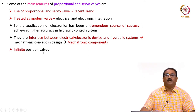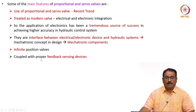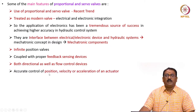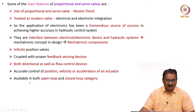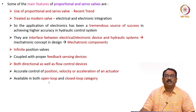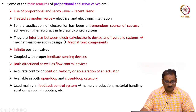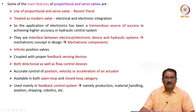In finite-position valves, they are coupled with proper feedback sensing devices. They are available as both directional and flow control valves. Accurate control of position, velocity, or acceleration of an actuator is ensured. They are available in both open-loop and closed-loop categories. Please remember: servo valves always work on a closed-loop basis, while proportional valves are open-loop but are now being extended to closed-loop as well. They are used mainly in feedback control systems — in production, material handling, aviation, shipping, robotics, and many other places.